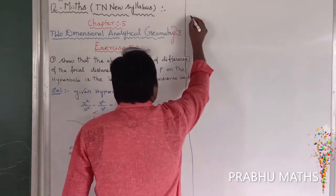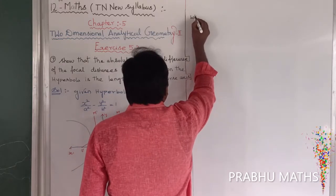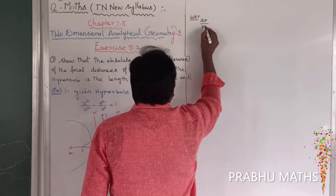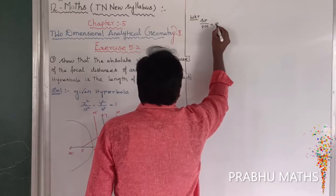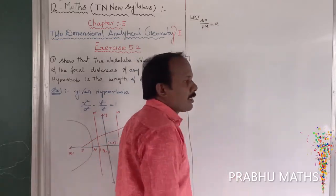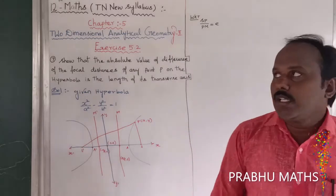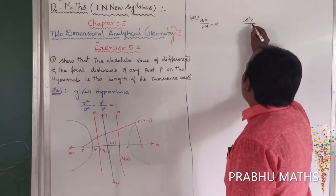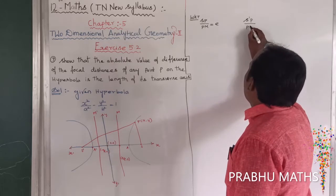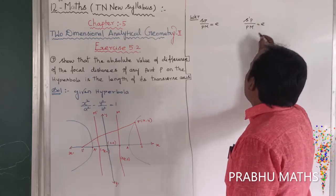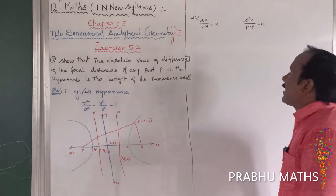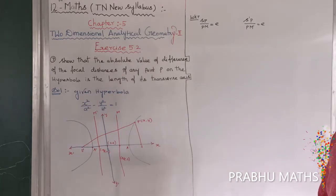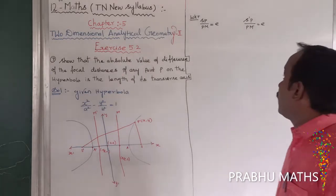We know that the conic section: SP by PM is equal to e. That is the first conic section, SP by PM is equal to e. The second conic section: S dash P by PM dash is equal to e.